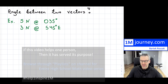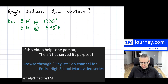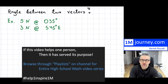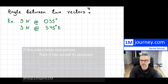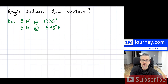Welcome in. Angle between two vectors. The dot product is interesting because once you learn about the dot product, you can very easily find the angle between two vectors.